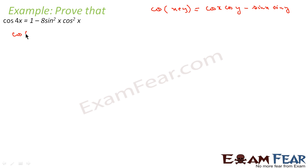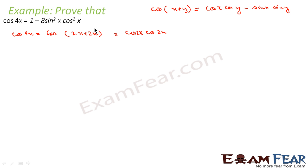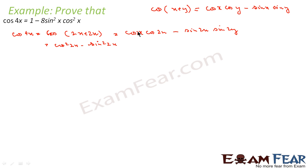We will use the formula cos(A+B) = cosA cosB - sinA sinB. So cos of 4x is nothing but cos of 2x plus 2x, and this is cos of 2x into cos of 2x minus sin of 2x into sin of 2x.